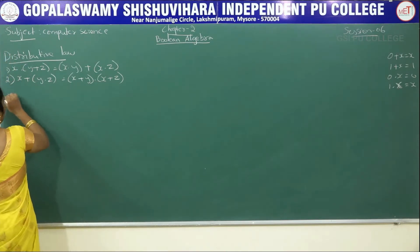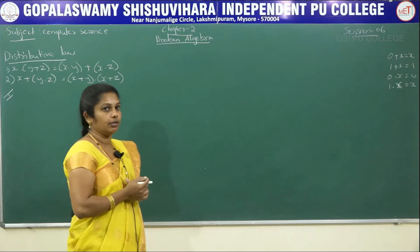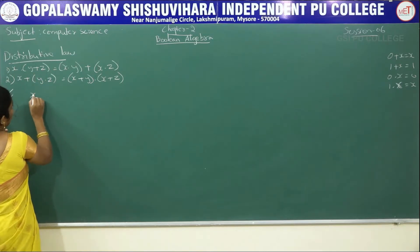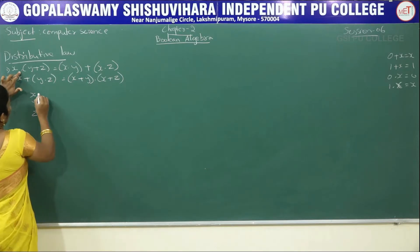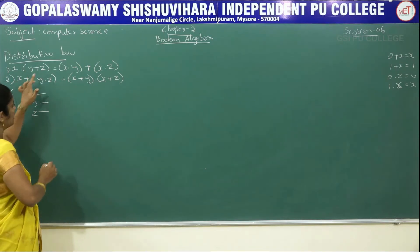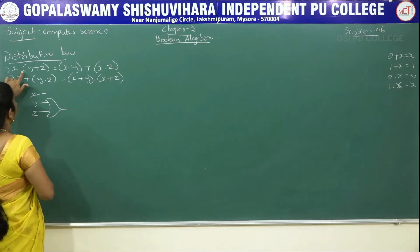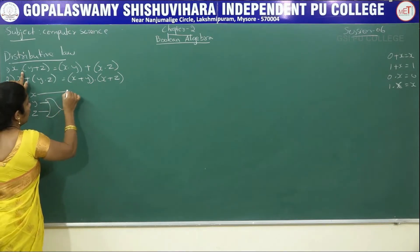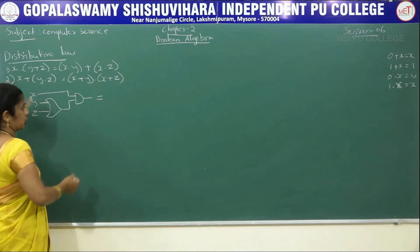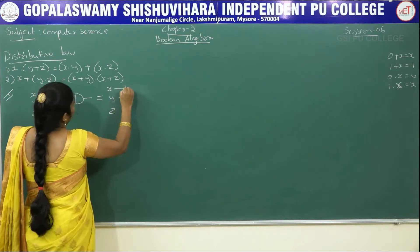Now I will prove the first distributive law. Before proving, we have to write the circuit diagram and truth table, then solve it. We have three variables x, y, and z. Here y plus z uses a reverse C-shape (OR gate), and the dot operator in between means we use a D-shape (AND gate).